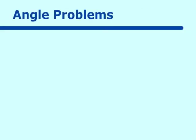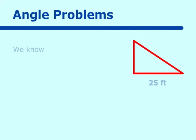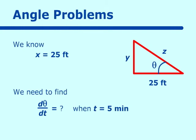Let's go to our final problem, which is an angle problem. Mario is standing 25 feet from a launch pad of a hot air balloon. If the balloon is rising at the rate of 20 feet per minute, how will the angle between Mario's eye and the balloon be changing after five minutes? This one requires trigonometry. We know x = 25 feet, dy/dt = 20 feet per minute, and we need to find dθ/dt when t = 5.